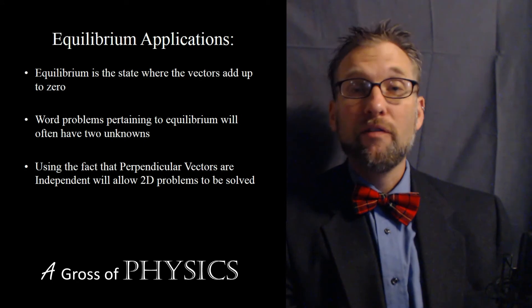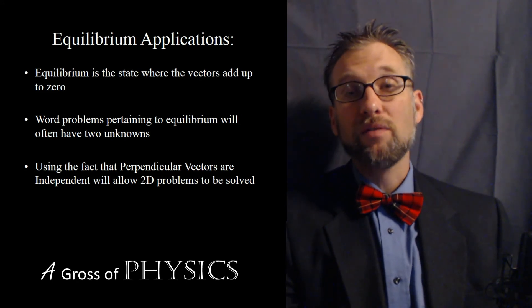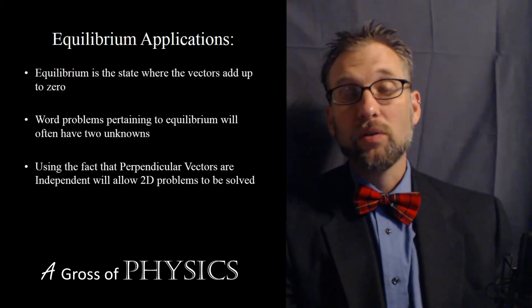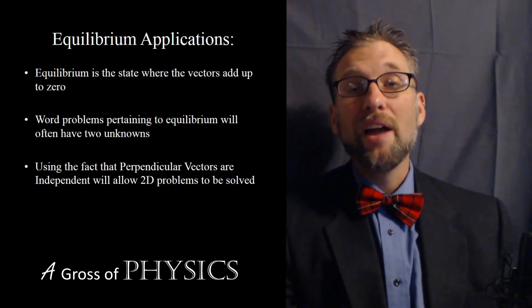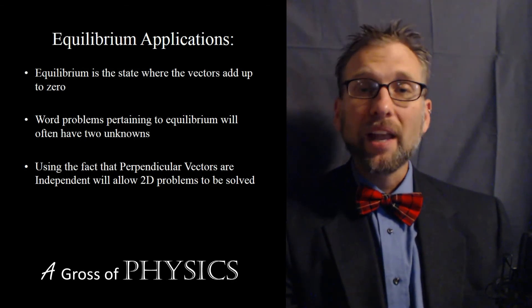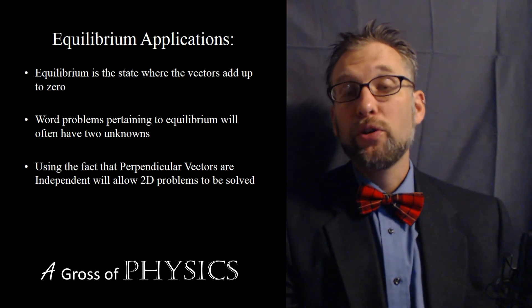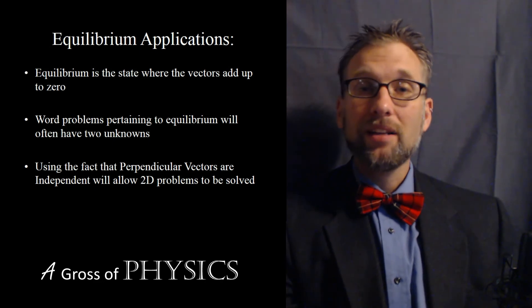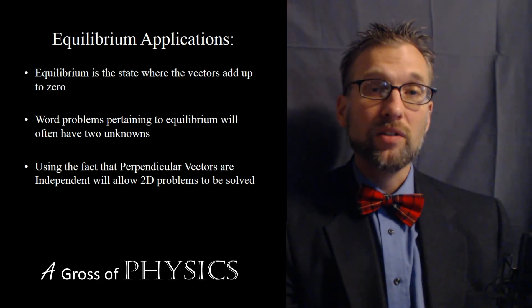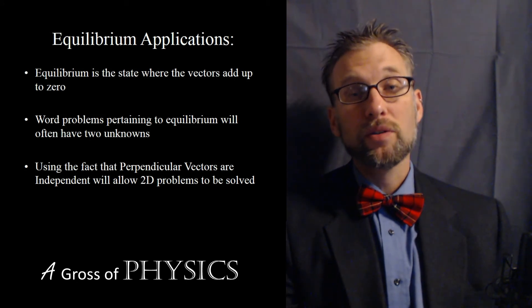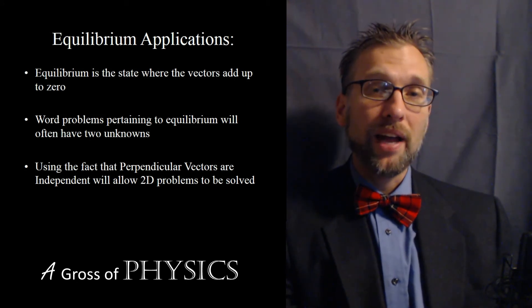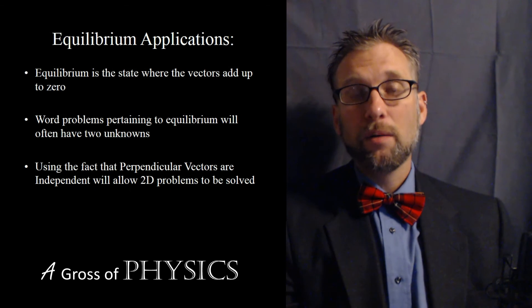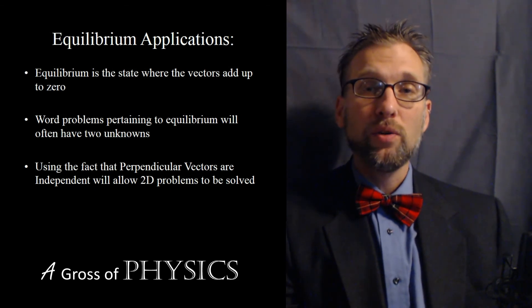What we can do is effectively set up all of the x vectors and set them equal to zero. Set up all of the y vectors, set them equal to zero. And if we do that, we end up with two equations. Now in math class, we would say we have two equations, we could have up to two unknowns. And there are different ways we can solve that. This is a fairly complex algebraic solution.